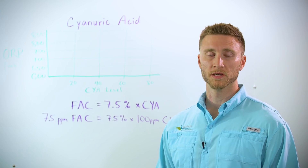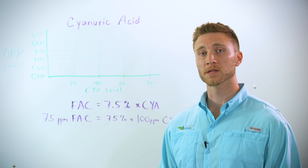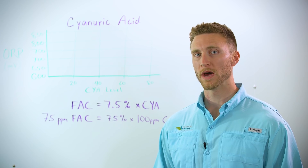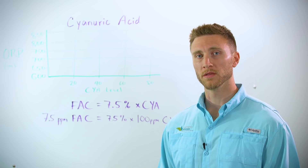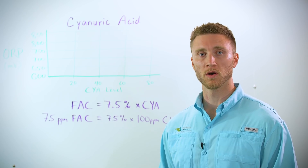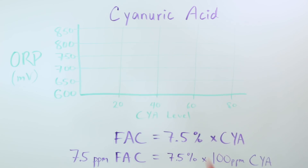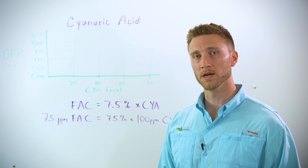One of the weaknesses in chlorine is the fact that direct sunlight will actually break it down in a matter of hours. Fortunately, there is a substance called cyanuric acid which protects chlorine from sunlight.